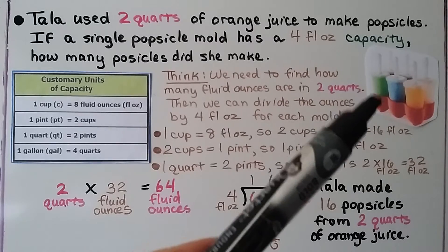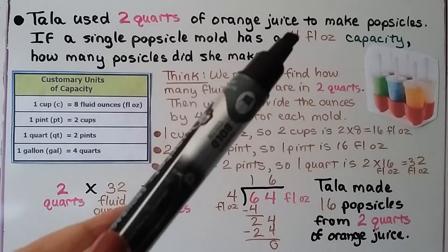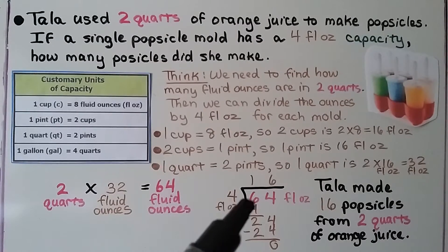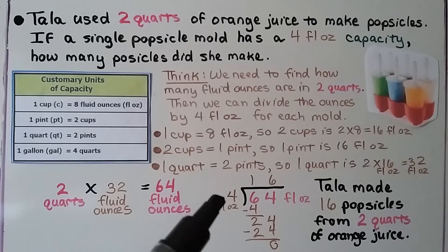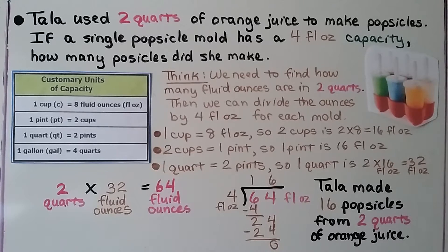Each popsicle mold holds four fluid ounces. So we do 64 divided by four. And that's 16. That means Tala made 16 popsicles from two quarts of orange juice.